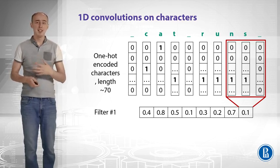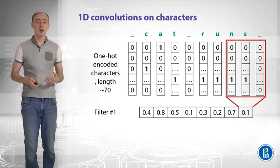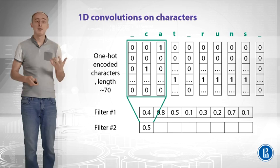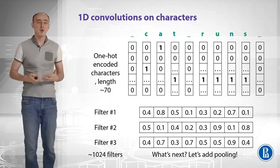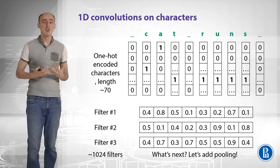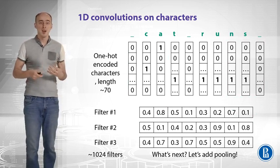We can have a different kernel, a different convolutional kernel, and we will have different values. We can take 1,000 of those kernels and we will have 1,000 filters in the result. But what's next?